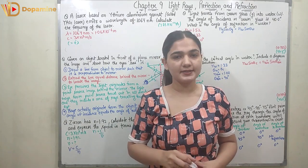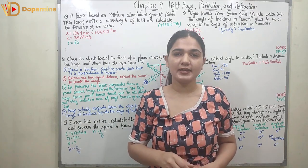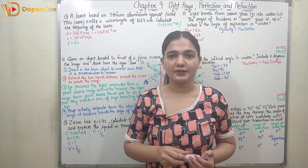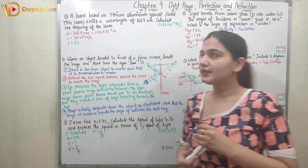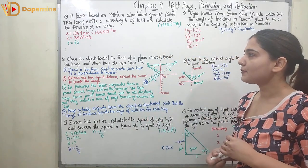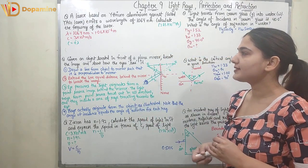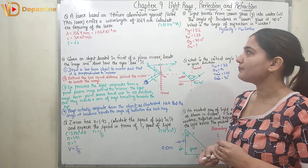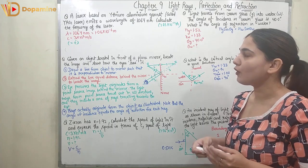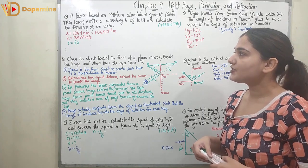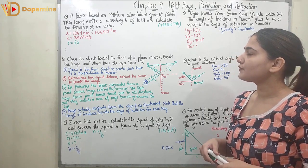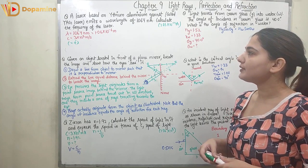Hello guys, we are discussing Chapter 9: Light Rays, Reflection and Refraction. Let's start with the first problem for the day. It states: a laser based on yttrium aluminium garnet, called a YAG laser, emits a wavelength of 1064 nanometers. Calculate the frequency of the laser.